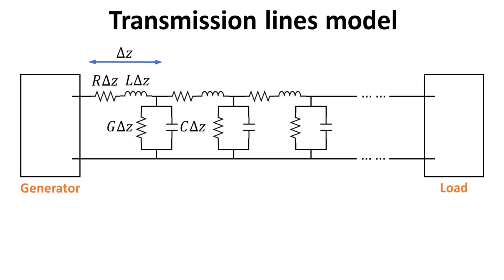The transmission line circuit is modeled with repeating R, L, G, C components. Delta Z denotes a unit length of the wire. Note that all these components are normalized to the wire length L. For example, R has a unit of ohms per meter, and L has a unit of henries per meter, and so on.